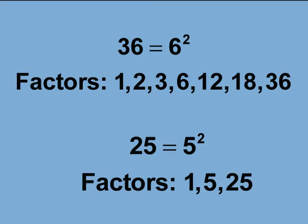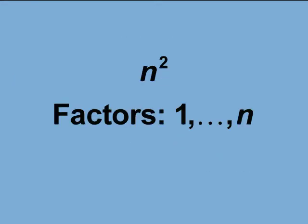36 is 6 squared. Its factors are 1, 2, 3, 6, 12, 18, 36. In both cases, each of the square numbers has an odd number of factors. In general, all square numbers have an odd number of factors.